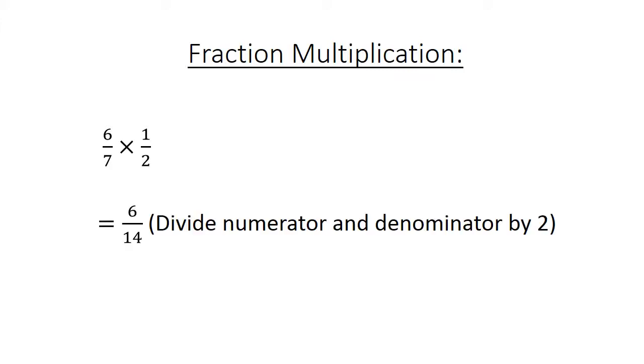Fraction multiplication: 6 over 7 times 1 over 2 equals 6 over 14. Now we're going to divide the numerator and the denominator by 2. Equals 3 over 7, and it's now the simplest form.